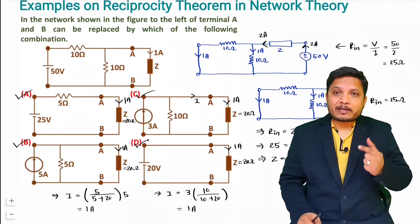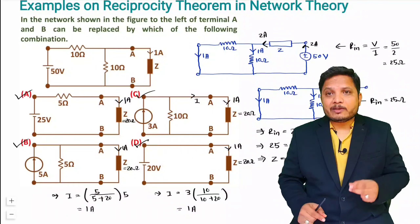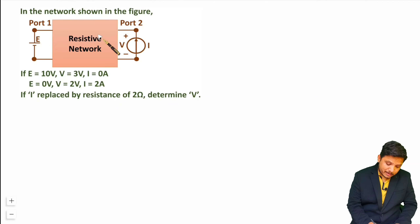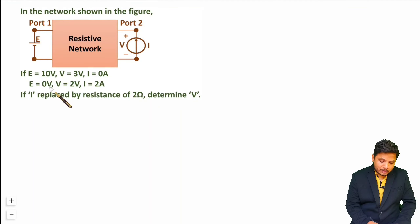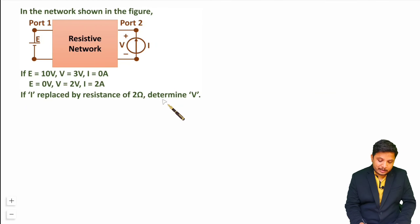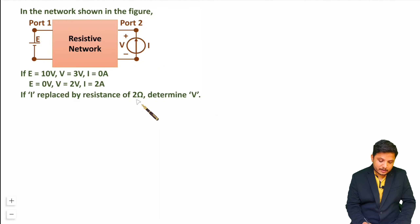Let me give you one more interesting example to further resolve your understanding. In the network shown in the figure, we have a resistive network with port 1 having an EMF source E, and port 2 having a current source I with voltage V across it. Two conditions are given: (1) E = 10 V, V = 3 V, I = 0; and (2) E = 0, V = 2 V, I = 2 A. The question asks: if I is replaced by a 2 ohm resistance, find the value of V.